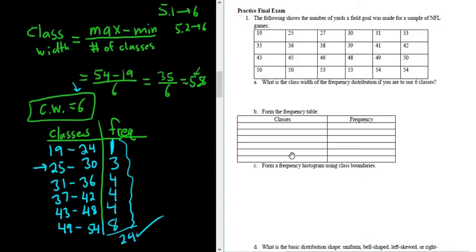What's the next part say? Form a frequency histogram using class boundaries. The trick here is that we don't need to find all of the class boundaries. We just need to find the first one. Class boundaries, they separate the gaps. So the trick in this problem is, let me just find like the first two boundaries. It's going to be 18.5. That's going to be the first boundary.